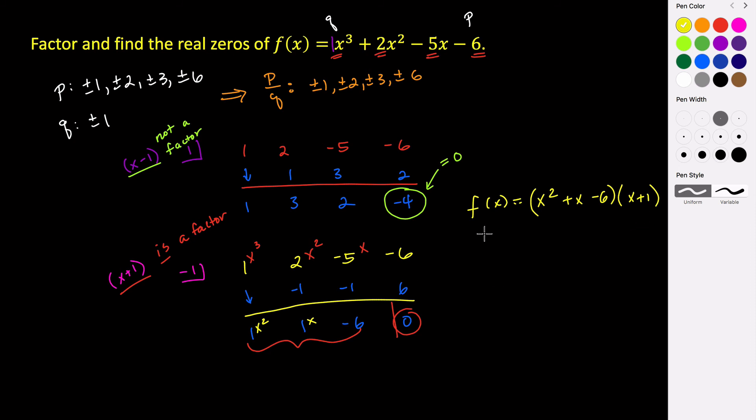Now at this point, we could continue doing synthetic division, or since we got pretty lucky and this is factorable, we can just factor this. So we need to look for values that multiply to be negative six and add to be one. So I think three and negative two work here. So we have f of x equals x plus three times x minus two times x plus one.